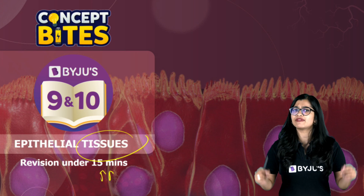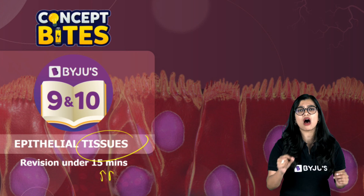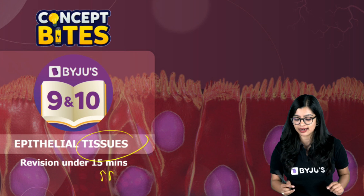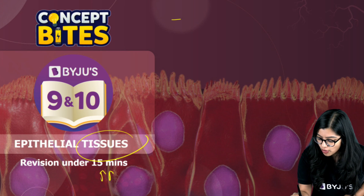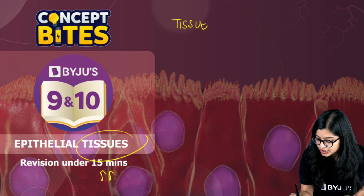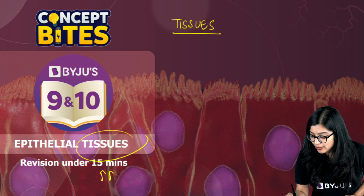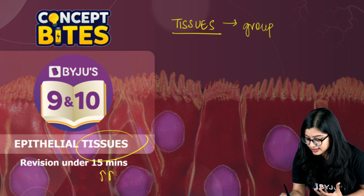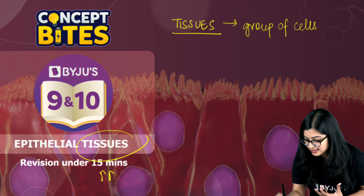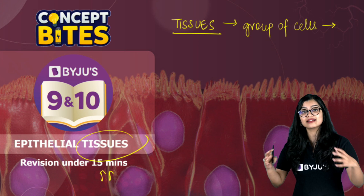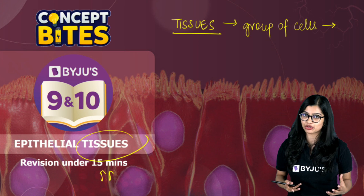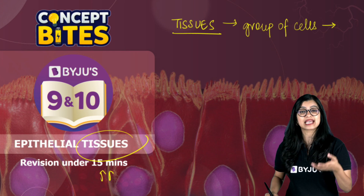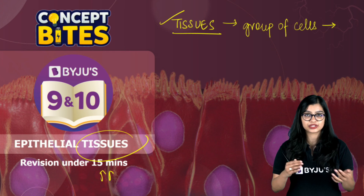To have a good understanding of epithelial tissues, we need a basic foundational understanding of what we mean by the term 'tissues.' Tissues are a group of cells that are similar in their structure and come together to perform a common function. In multicellular organisms like plants and animals, we do find tissues.